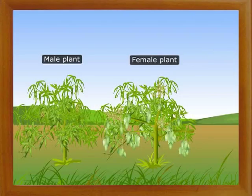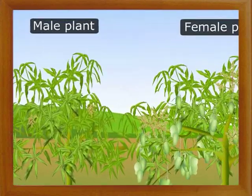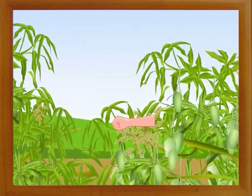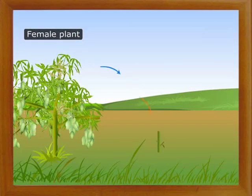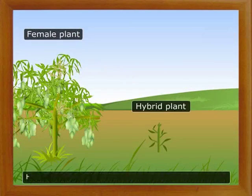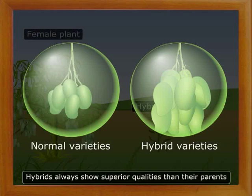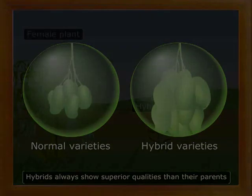In hybridization, the plants with desirable characters are selected. The pollen from the male plant with desirable traits is placed on the stigma of the female plant. The resulting plant is a hybrid. Hybrids always show superior qualities than their parents. Hybridization in plants has speeded up the production of new varieties on a larger scale and is the best choice for crop improvement. It can be adopted in both self- and cross-pollinating plants.